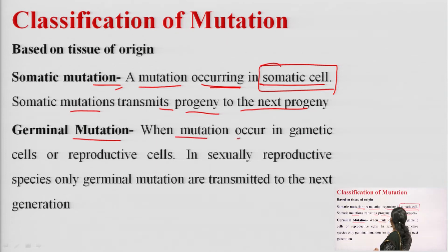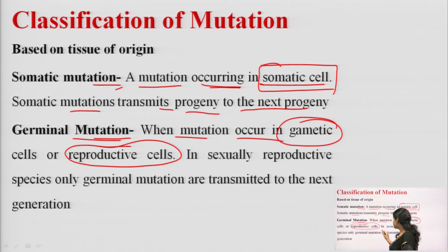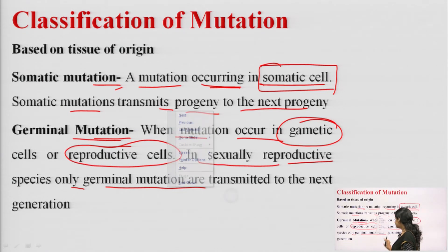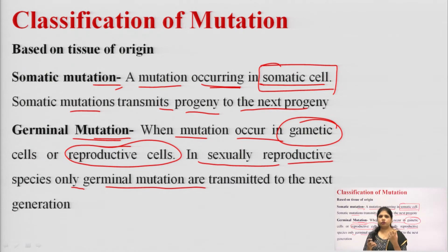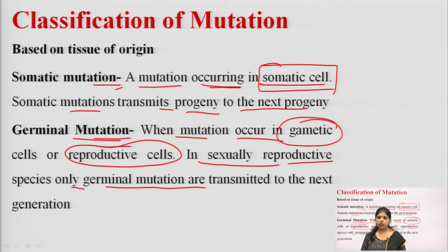Germinal mutation occurs when mutation occurs in the gamete cells or reproductive cells. If any changes or mutations occur in the sperm cells or ovum cells, those are germinal mutations. In sexually reproductive species, only germinal mutations are transmitted to the next generation, passing from one generation to the second generation.